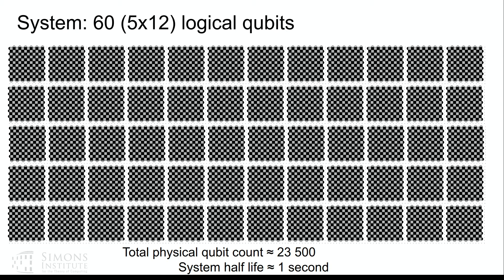For computation you need many qubits, and for classically intractable computation you need more than 50 since people can store that in disk. So we need around 60 of them. The system half-life is smaller because each of the 60 individual qubits could fail, giving a system half-life of around a second—roughly a 60th of a minute. The total physical qubit count is now around 2,500.